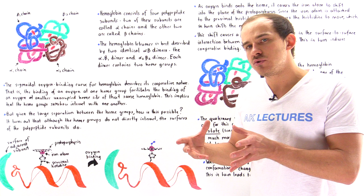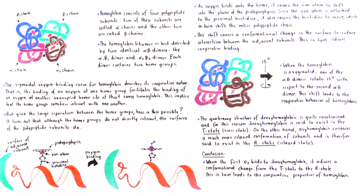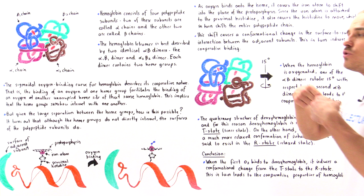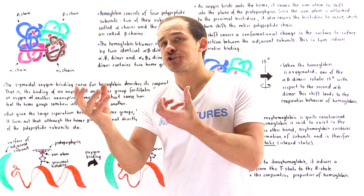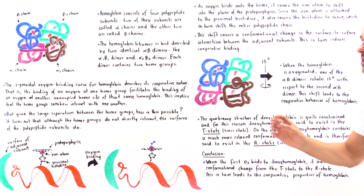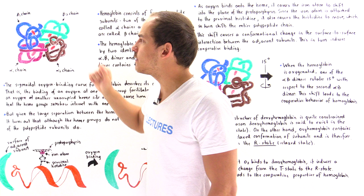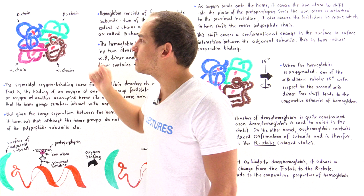In conclusion, when deoxyhemoglobin has one of its unoccupied heme groups begin to bind an oxygen molecule, it induces a conformational change from the T state to the relaxed R state. This causes a change in the surface-to-surface interaction between the polypeptide chains, which is precisely what causes the cooperative behavior of the different heme groups. That is exactly why when one oxygen binds onto one heme group, the conformational change causes the other heme groups to increase their affinity for binding oxygen.